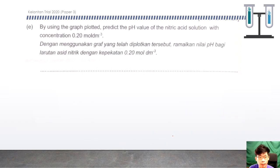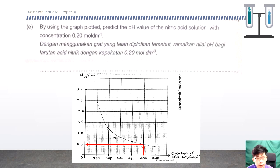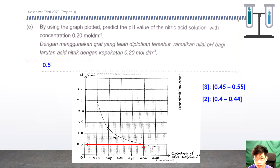Next question: using the graph plotted, predict the pH value for nitric acid with a concentration of 0.20 mol per cubic decimetre. You have to use your graph. Based on the graph, 0.20 mol per cubic decimetre gives a pH value of 0.5. The range for score 3 is 0.45 to 0.55. For score 2 it is 0.40 to 0.44. If you write less than 0.6, you get score 1.